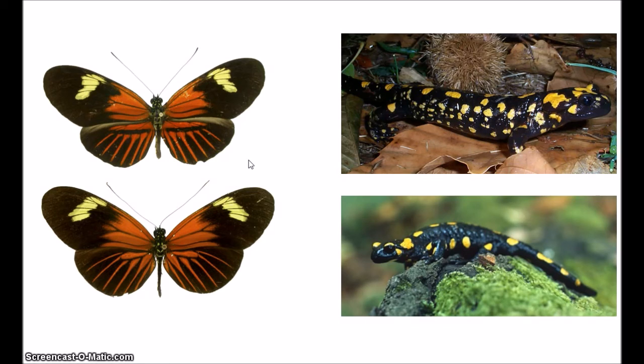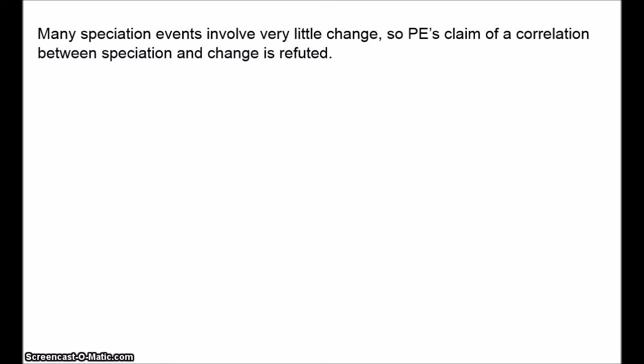Cases like this are fairly common. In most cases, identifying a new species requires being an expert in the field and knowing very small and precise differences to look for. Clearly many speciation events occur with barely any morphological changes. Since paleontologists can only classify species based on morphology, they'll obviously miss these events — giving us the illusion that speciation is always accompanied by significant change. But it's not. We know speciation is not accompanied by significant change, so punctuated equilibrium is refuted.